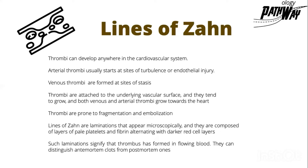Thrombi are prone to fragmentation and embolization. For Lines of Zahn, they are laminations that appear microscopically and even grossly, and they are composed of layers of pale platelets and fibrin alternating with darker red cell layers. Such laminations signify that the thrombus has formed in flowing blood, so their presence can distinguish or prove that this clot is an antemortem one, and their absence will be in the postmortem clots.